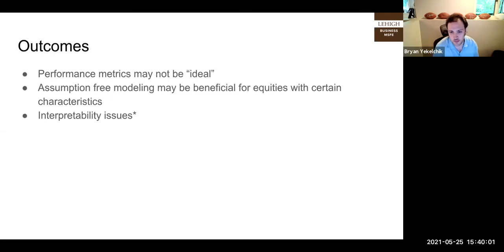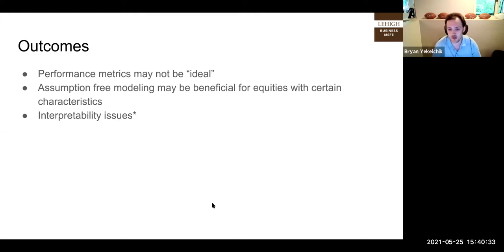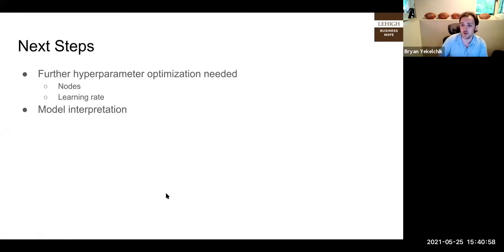The performance metrics might not be ideal, but the assumption-free modeling aspect may be beneficial for equities with certain characteristics — the Teslas of the world. There's no free lunch: we lose interpretability. But with time, we have methodologies to interpret neural nets in some way, shape, or form. That third asterisk is a diminishing issue but still important to note. Further optimization is possible — nodes, learning rates, optimizing every hyperparameter can be continued to be tuned. The next steps include interpreting what's going on under the black box hood.